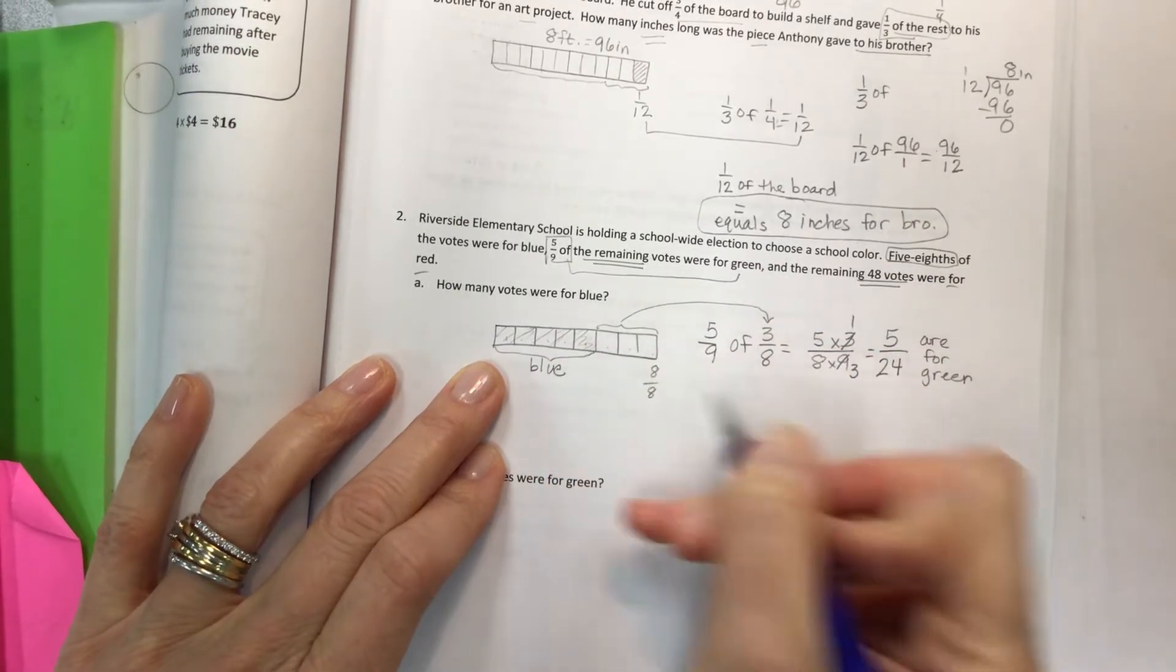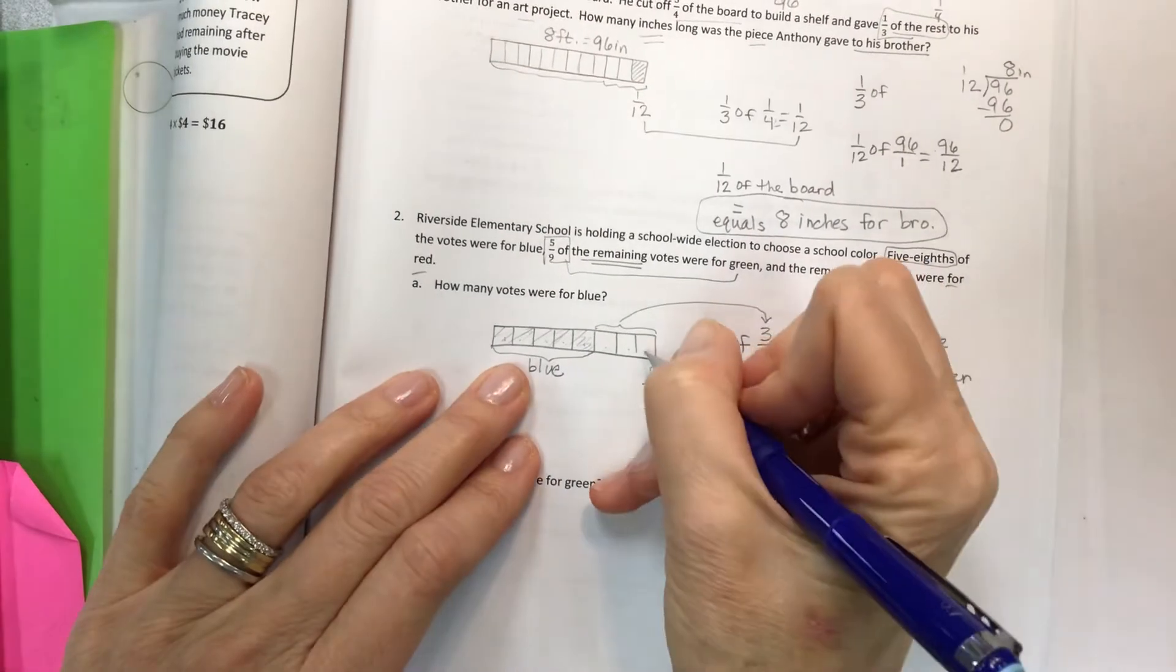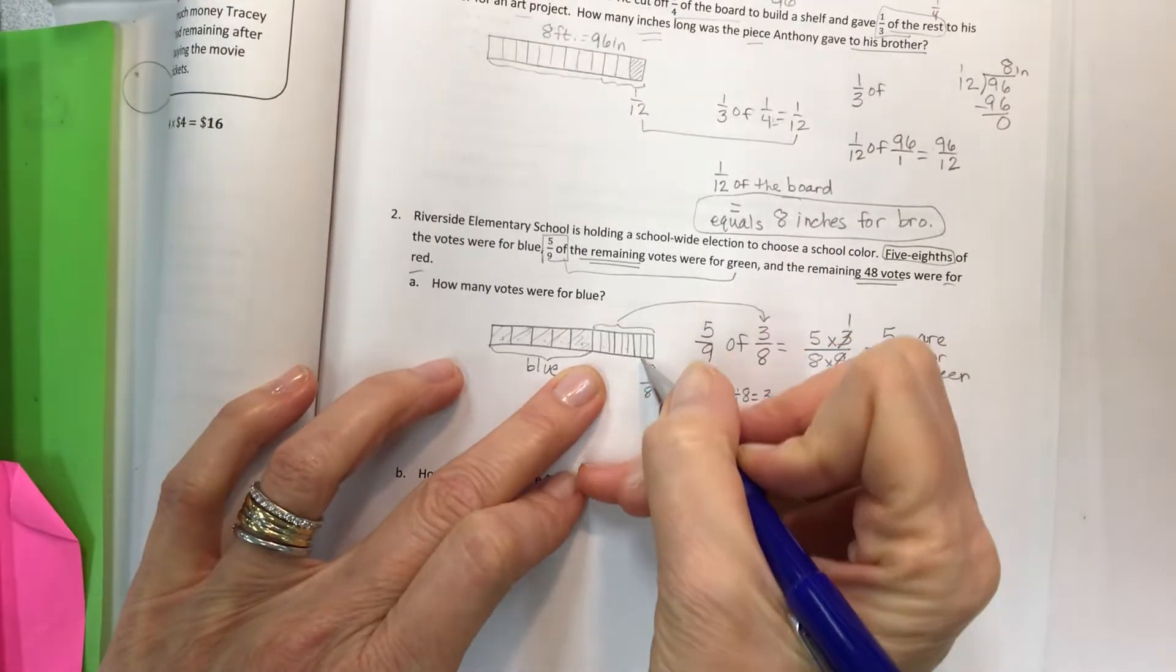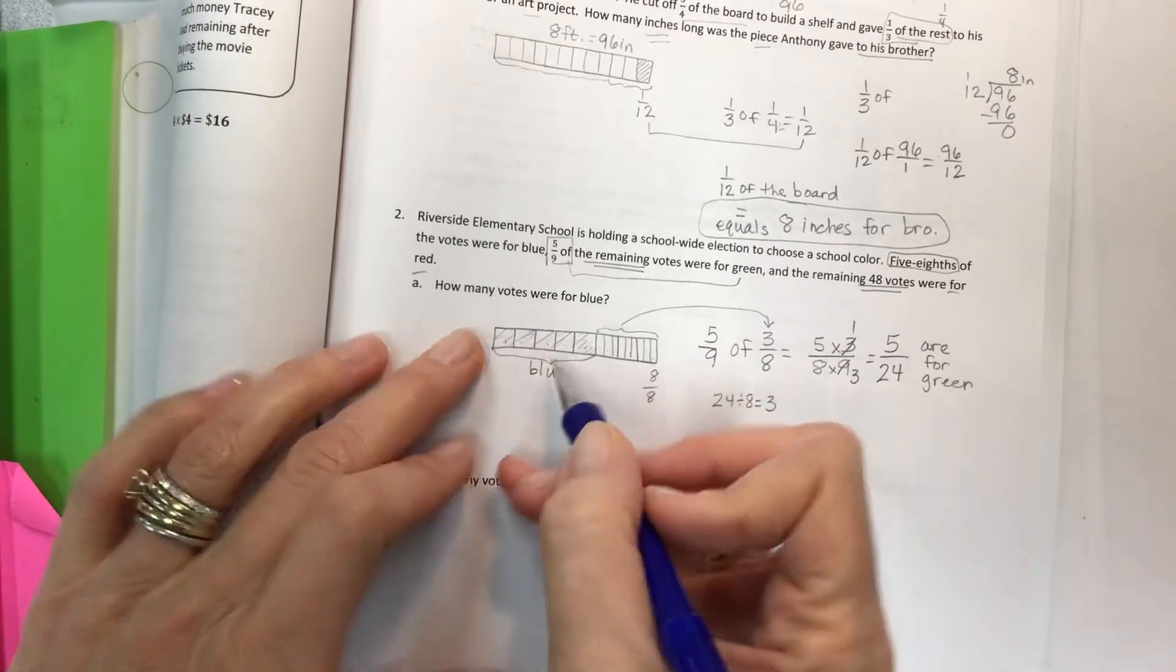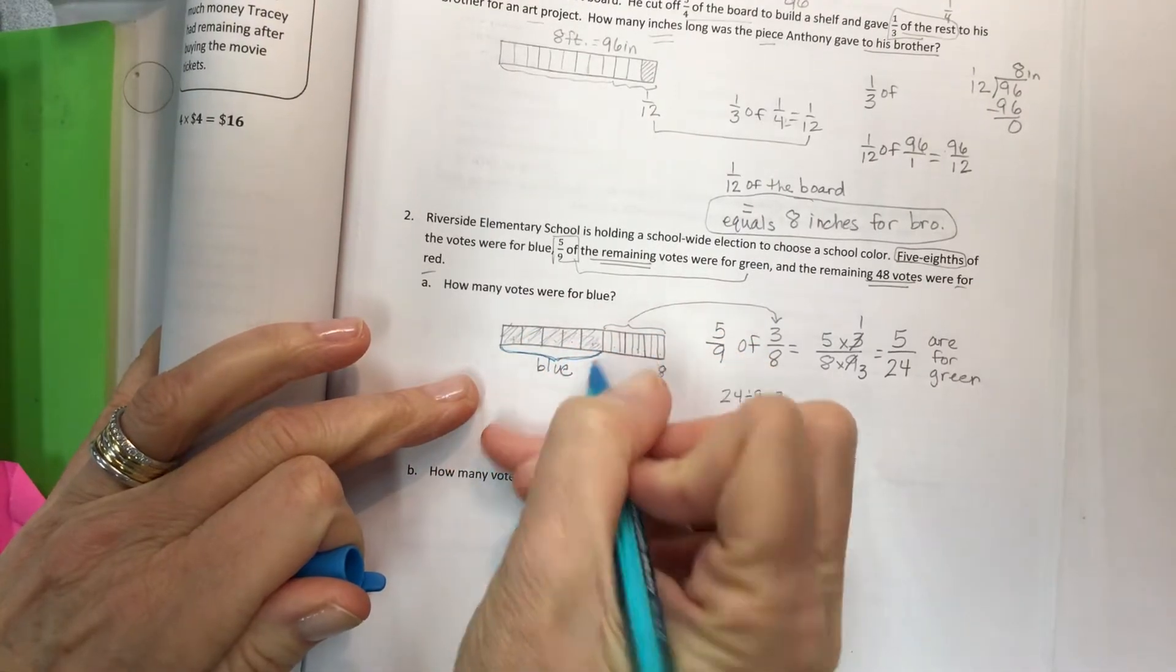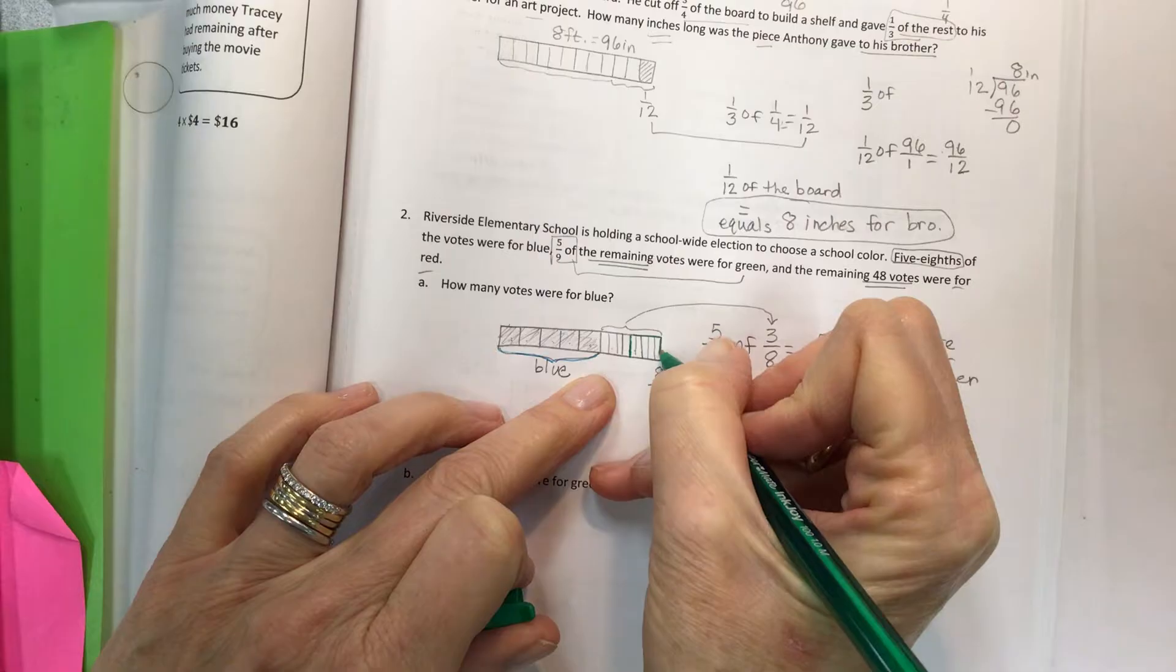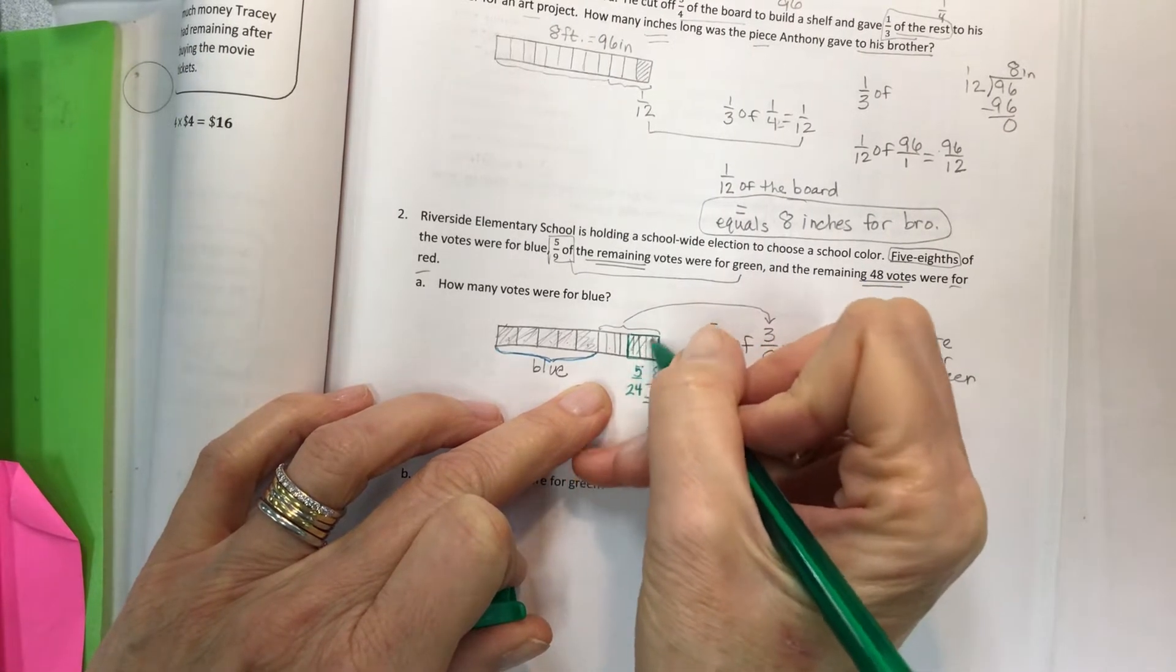Okay, so five-ninths of the remaining votes. So three-eighths remain and we're going to take five-ninths of that. So if you recognize that if you were to write this and switch the location, remember because of the commutative property you can change the order of the factors, then you have three-ninths which is equal to one-third. Multiplying across, you end up with the fact that five twenty-fourths are for green. So we'll have to figure that out. So we've got our ninths dividing the three-eighths. So if I have twenty-fourths, but it's in eight parts, how many pieces would be in each eighth? That would be three.